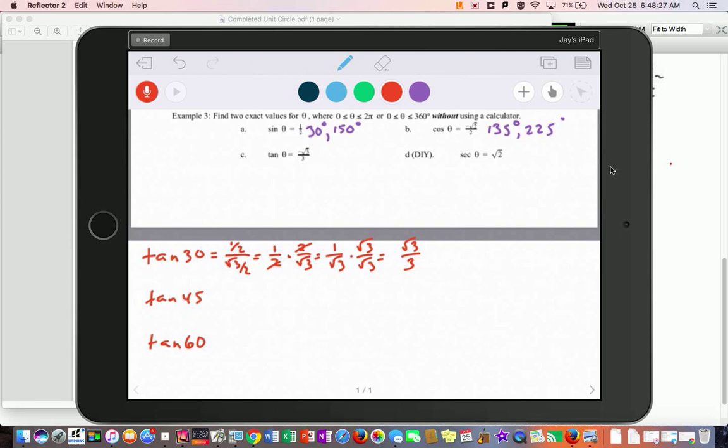Now if I do the same thing for the 45s, remember 45s have the same two ordered pairs, whether they're positive or negative. So it's root 2 over 2, root 2 over 2, and when you do that one, you get 1. So around the unit circle, tangent of 45 is 1 or negative 1, depending on what quadrant you're in. So those are pretty easy to remember.